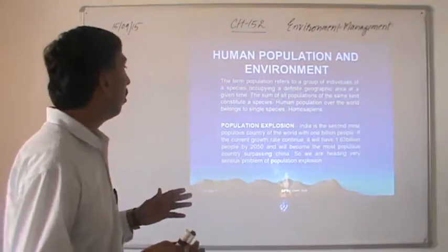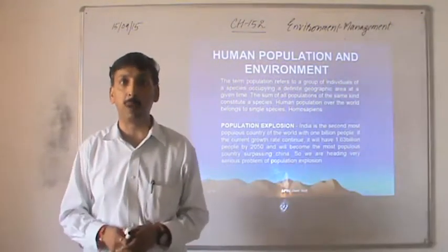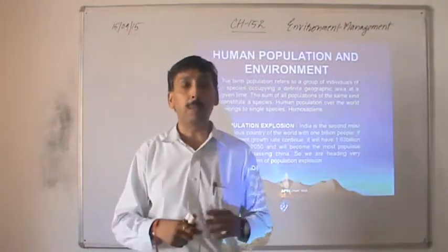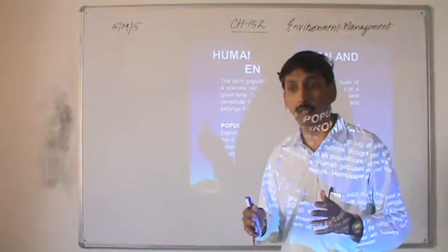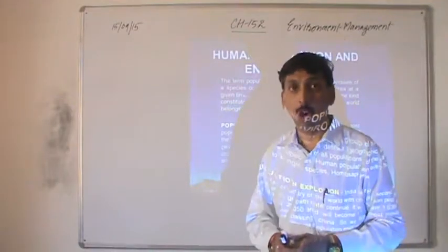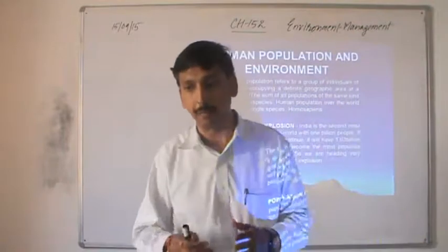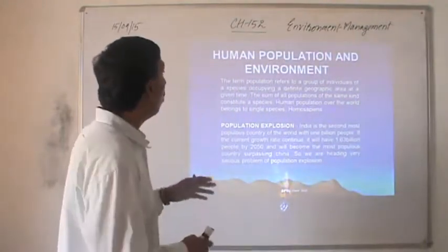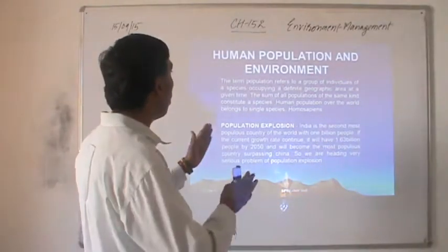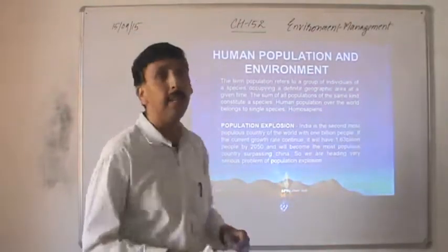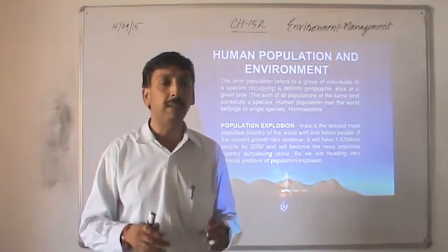What do we mean by population? How can we define this term? The term population refers to a group of individuals of a species occupying a definite geographic area at a given time. The sum of all the population of the same kind constitutes a species. Therefore human population of the world belongs to a single species which is known as Homo sapiens.